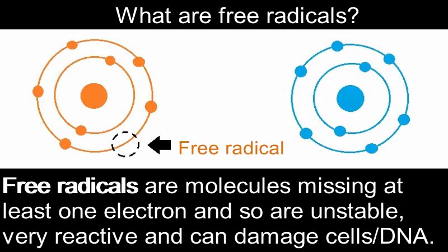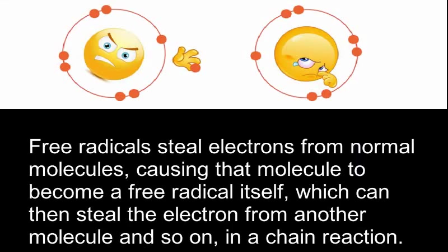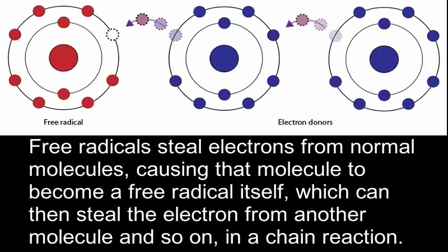Free radicals are molecules which are missing at least one electron and so are unstable, very reactive, and can damage cells and DNA. Free radicals steal electrons from normal molecules, causing that molecule to become a free radical itself, which can then steal the electron from another molecule, and so on, in a chain reaction.